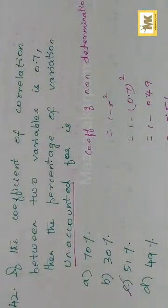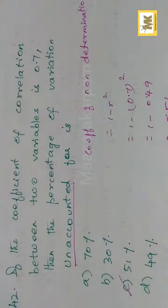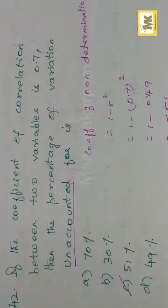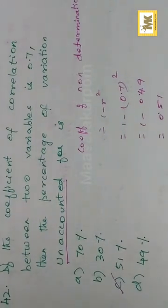Coefficient of correlation between two variables is 0.7. Then the percentage of variation unaccounted for — that is the coefficient of non-determination — is 1 minus r squared. So 1 minus 0.7 squared gives 0.51 — as a percentage, 51%. That's all.